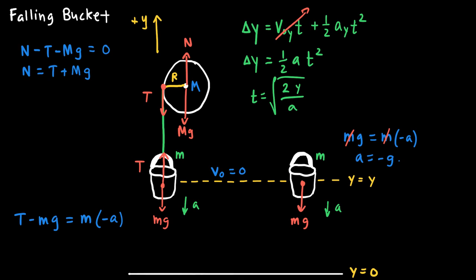Rearranging for t, the time to fall a vertical distance y is t equals the square root of 2y divided by a. For the bucket on the right, substituting the acceleration g gives t equals the square root of 2y over g.